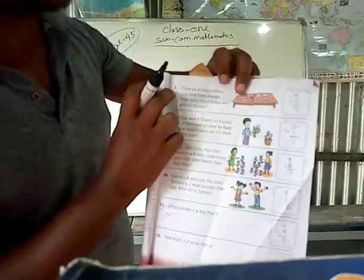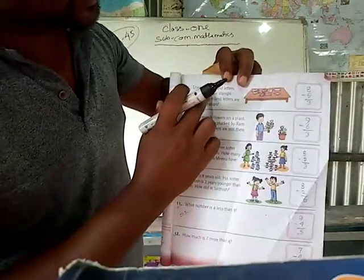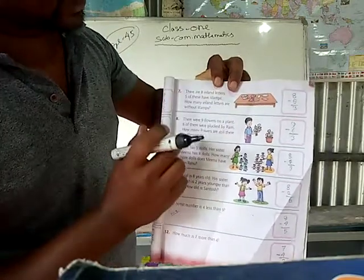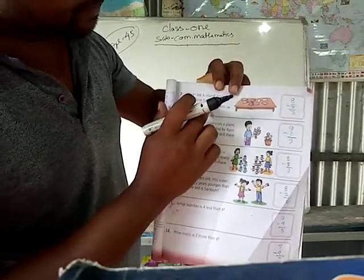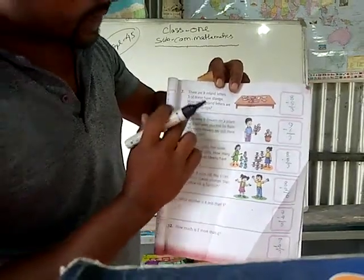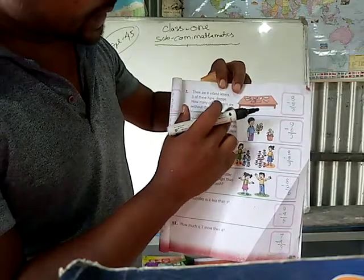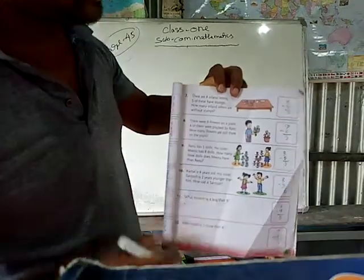What is the given? Number 7. There are 8 inland letters. 5 of these have stamps. How many inland letters are without stamps?